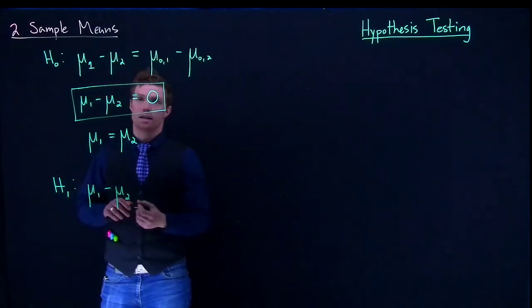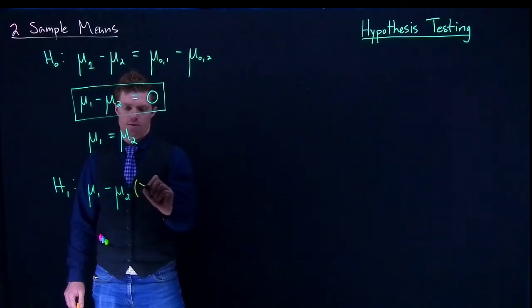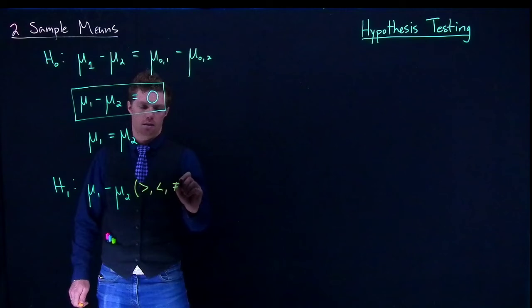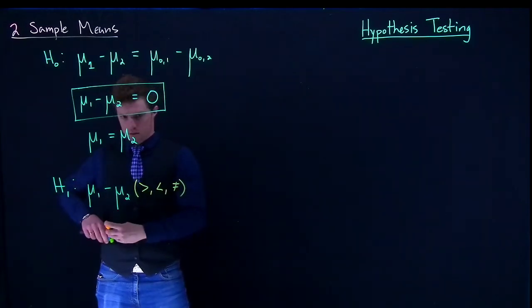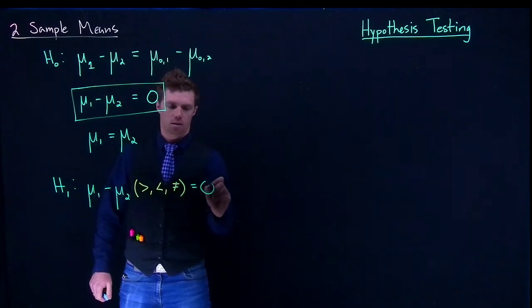And then depending on what type of test we're doing, if we're doing a one tail or a two tail test, we can have greater than, less than, not equal to.